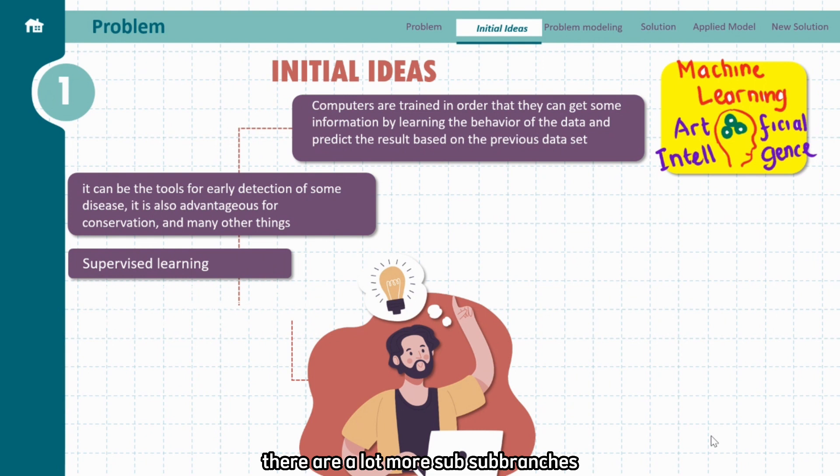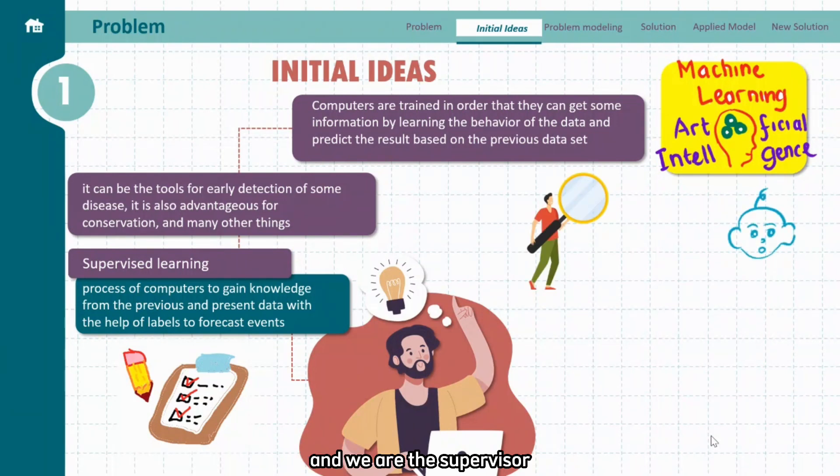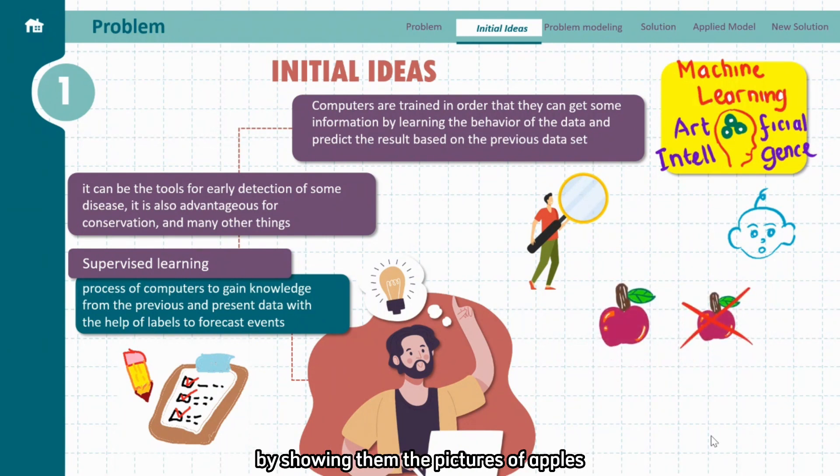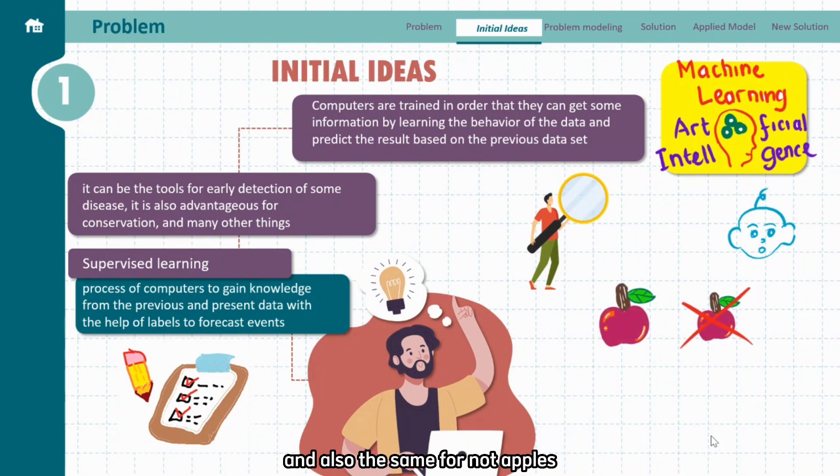In machine learning itself, there are a lot more sub-branches, but this time I will discuss supervised learning. Supervised learning is a process of computers to gain knowledge from the previous and present data with the help of labels. Imagine the computer is our child and we are the supervisor. We want the child to learn what an apple is by showing them the pictures of apples and the pictures of not apples multiple times. When the picture of apples is shown, we tell them it's apples, and also the same for not apples. After a while, we are going to test them with some pictures and see whether they can distinguish the picture of apples and not apples. And that is supervised learning.